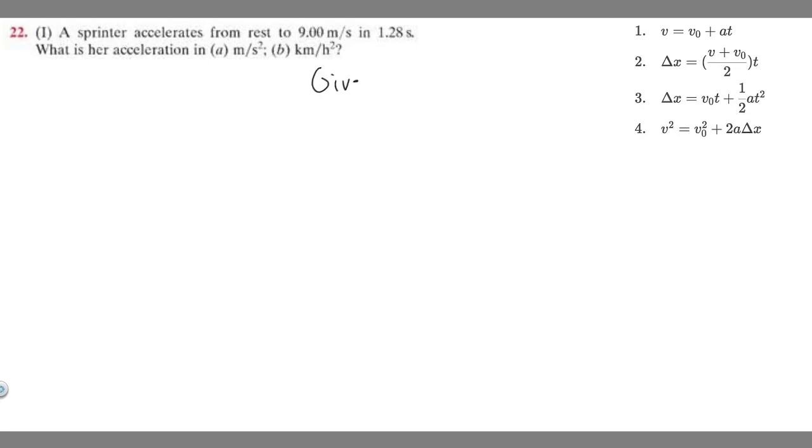In order to solve the problem, let's write down what's given first. We're told that the sprinter accelerates from rest, so their initial velocity is going to be 0 because they're starting at rest,